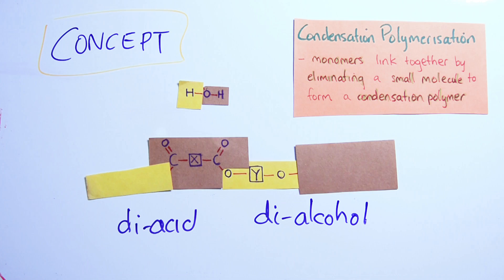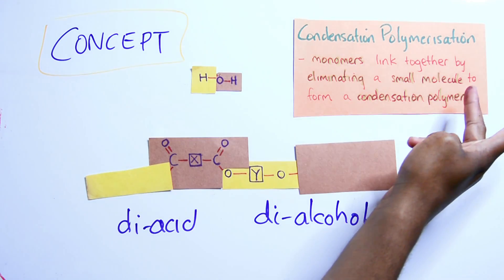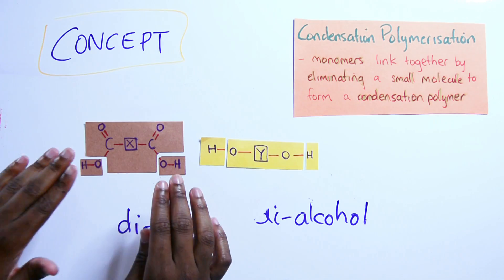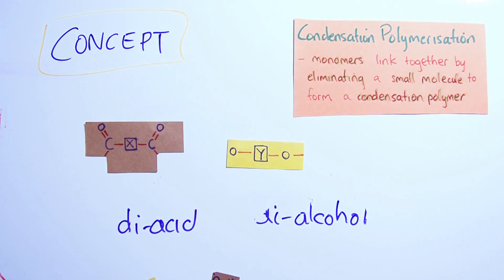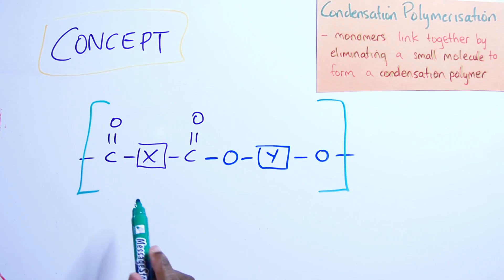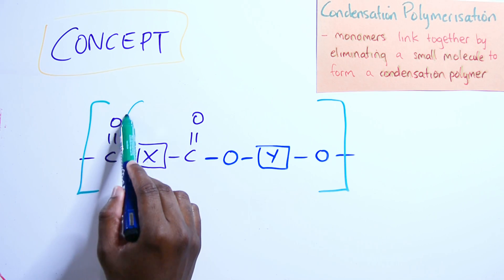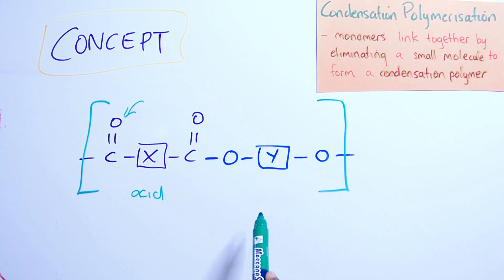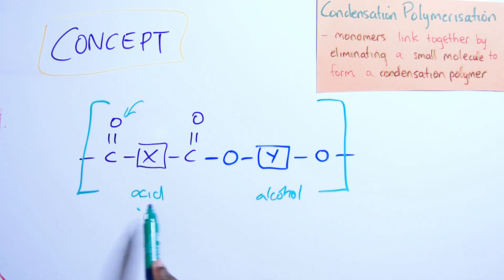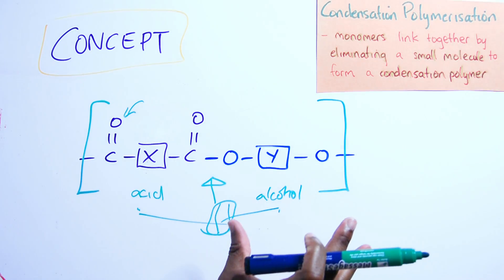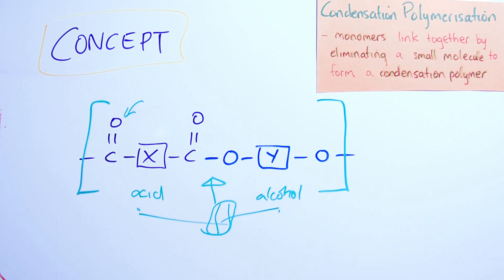Condensation polymerization involves removing parts of the monomer — that's why we say we eliminate a small molecule to form a condensation polymer. In this case, water is eliminated. The repeating unit still has the double-bond oxygens from the acid intact, and oxygen from the alcohol, since the H's left. Acid plus alcohol means esterification is taking place — so this is actually a polyester.